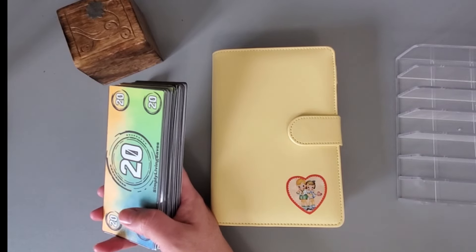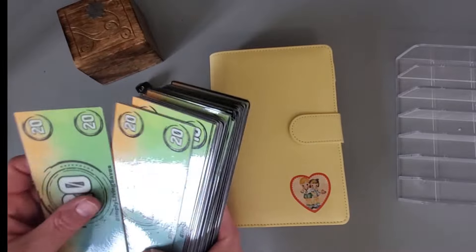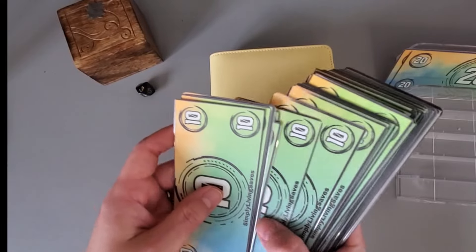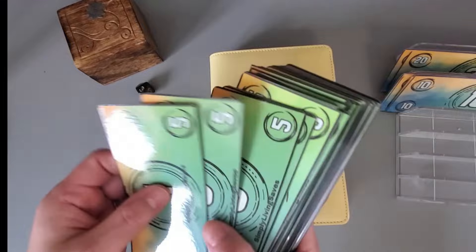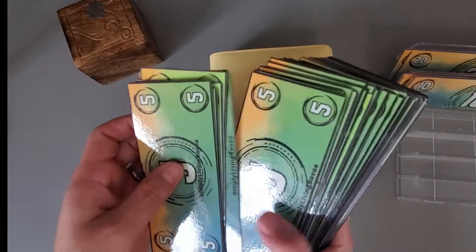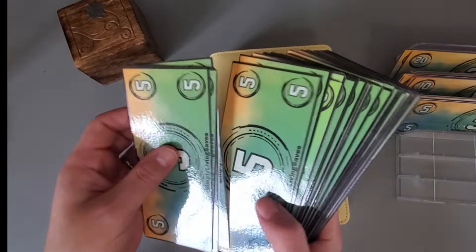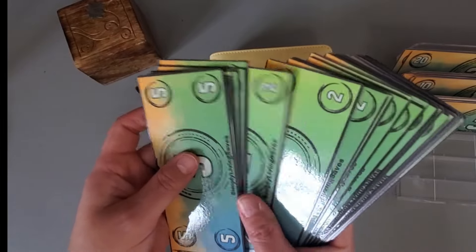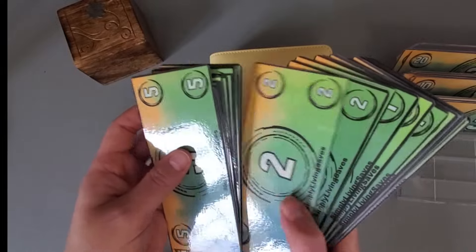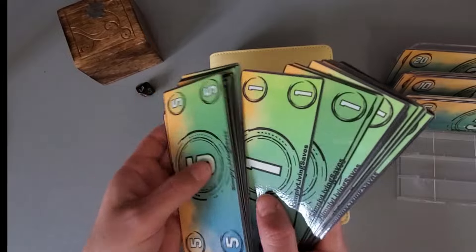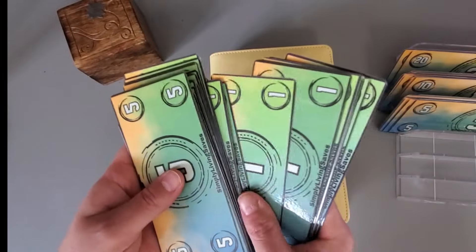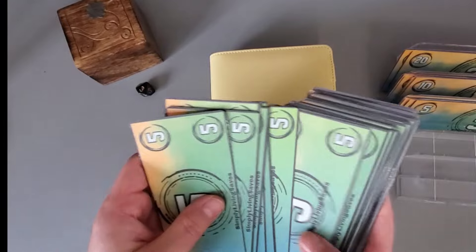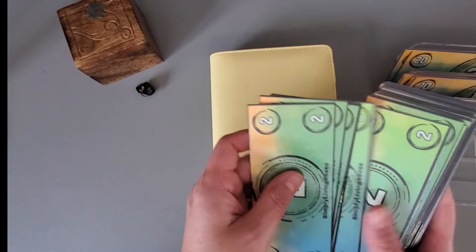We should have $283 in prop money here. So we have 20, 40, 50, 60, 70, 80, 91, 10, 20, 30, 40, 50, 60, 70, 80, 92, 10, 20, 30, 40, 42, 44, 46, 48, 50, 52, 54, 56, 58, 60, 62, 64, 66, 69, 70, 71, 72, 73, 74, 75, 76, 77, 78, 79, 80, 81, 82, 83. So 283 is what we have here.